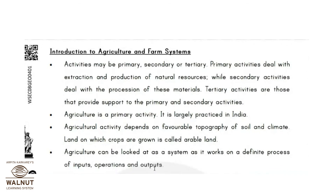We have seen three economic activities: primary, secondary, and tertiary. Agriculture is a primary activity and is largely practiced in India. It is totally dependent on favorable topography of soil and the climate. The land on which crops are grown is called arable land, as we saw on the maps. Agriculture can be looked at as a system — a definite process of inputs, operations, and outputs. Instead of operations we can also write processes. This way we have completed the lesson.